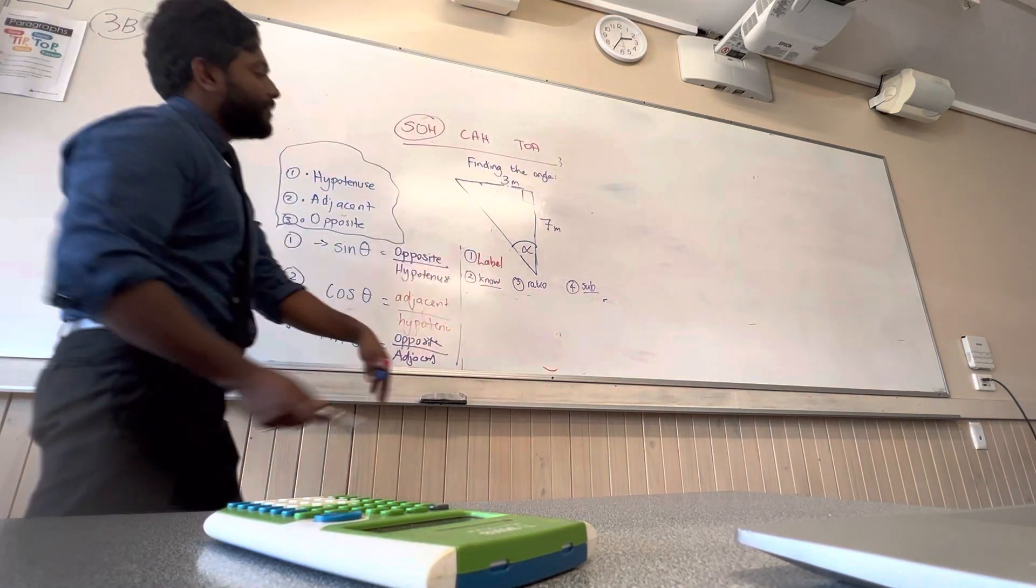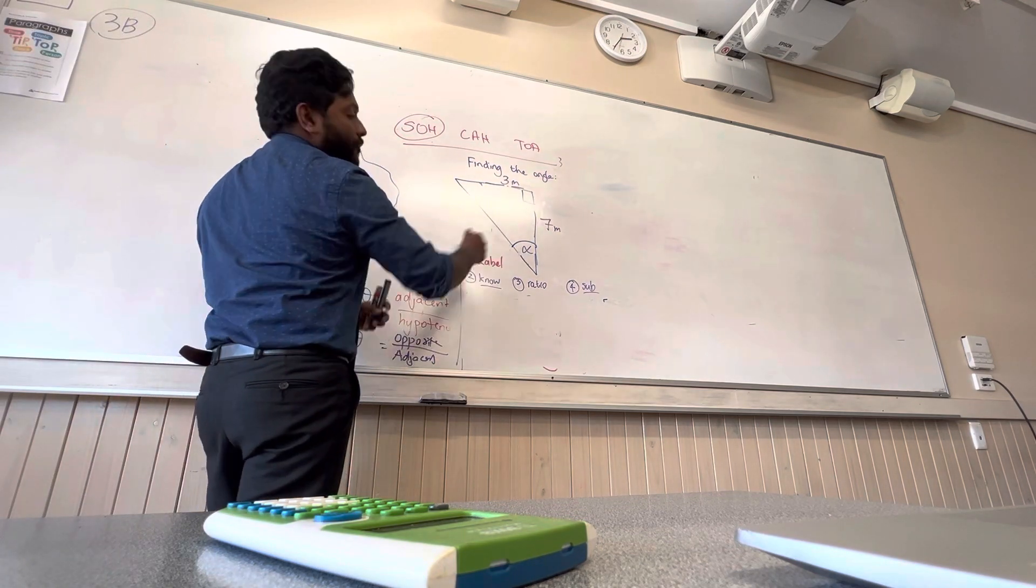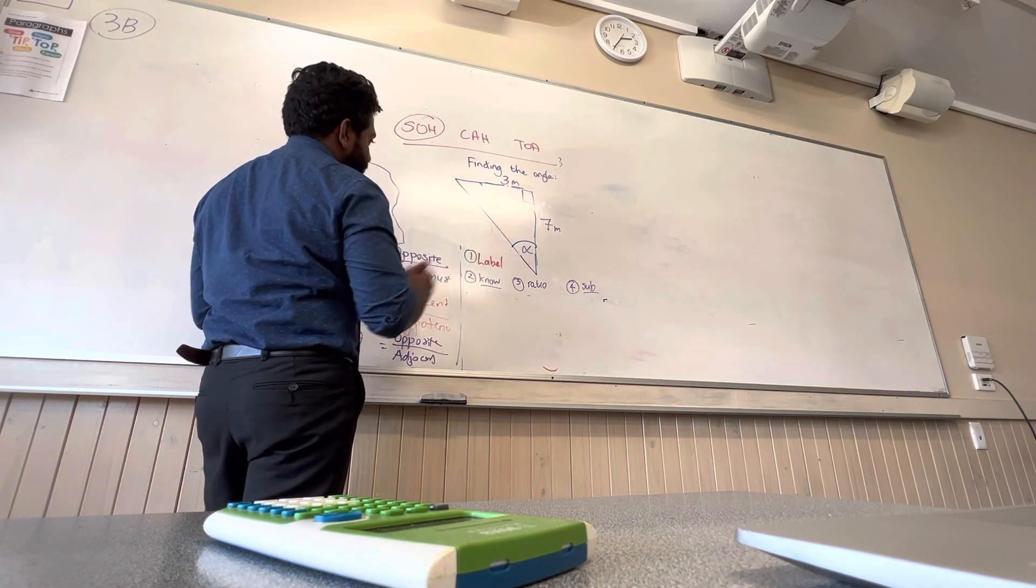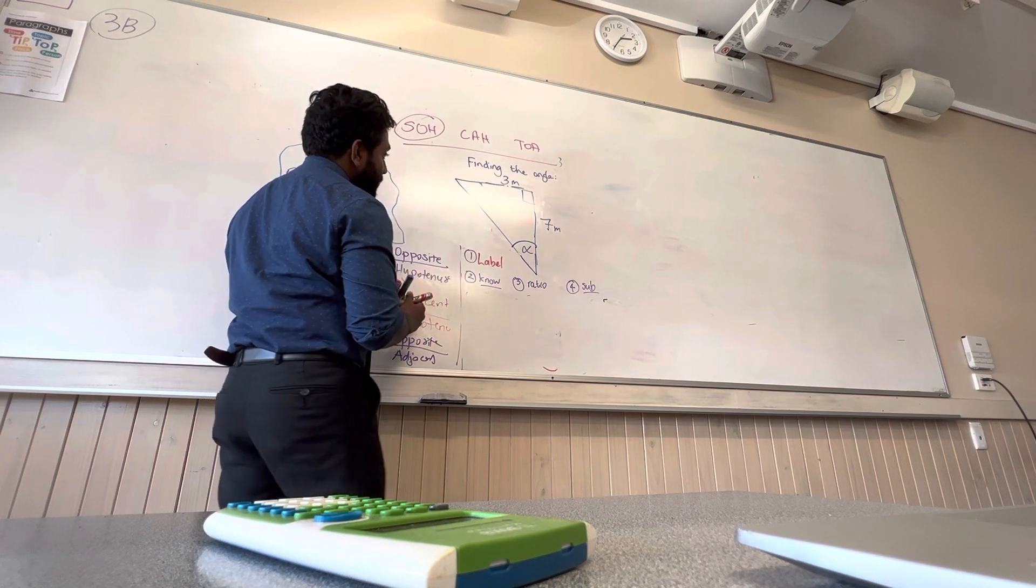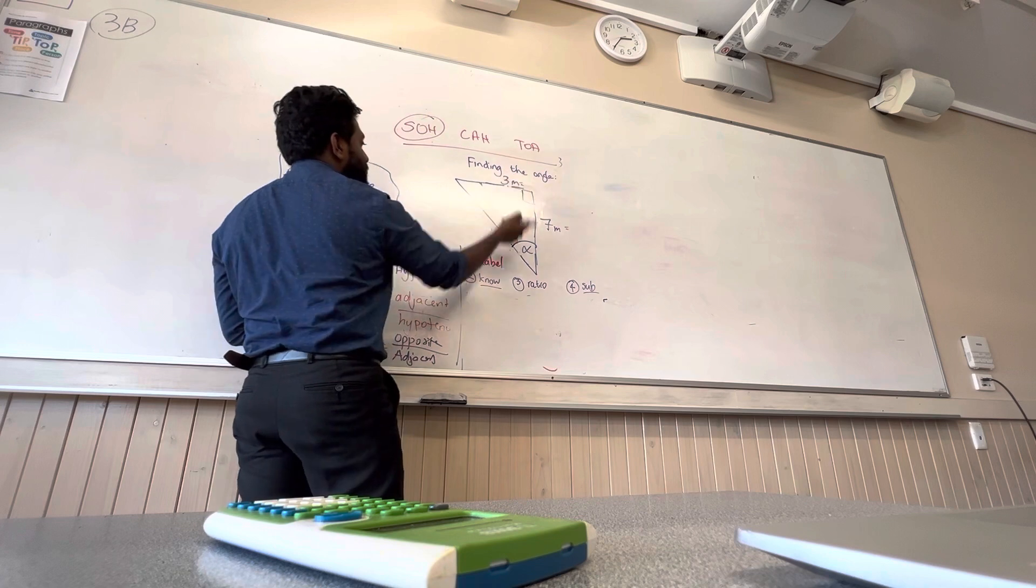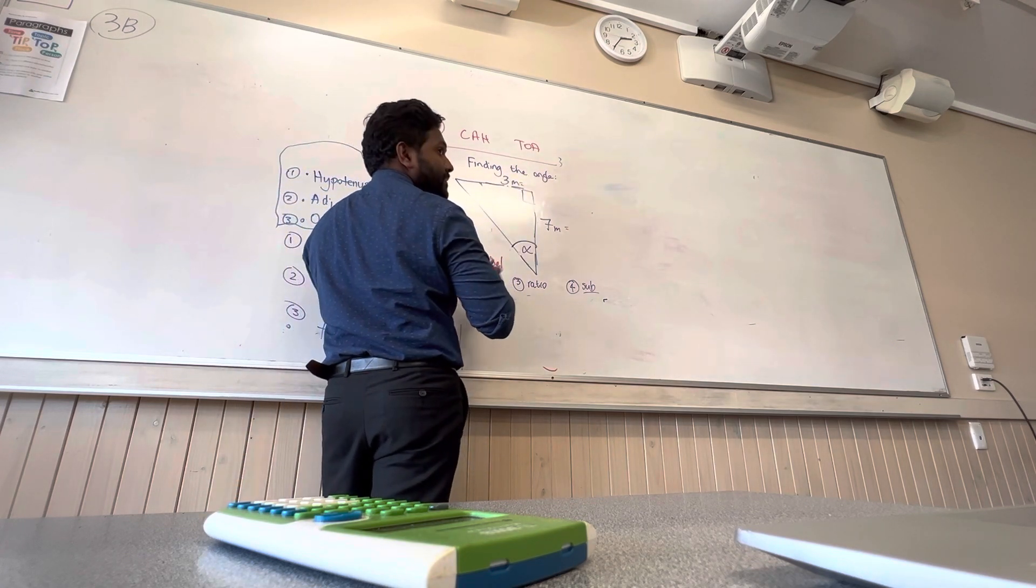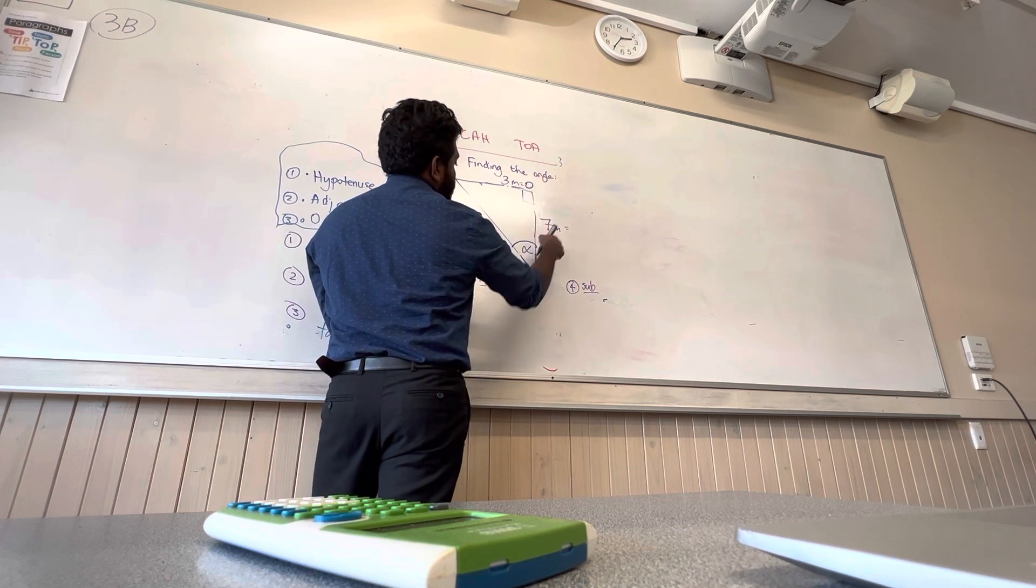With this question we need to find out the angle. You've got three meters, seven meters, and you've got alpha. So we're going to label it. This should be our alpha. That means facing opposite, you've got your three meters, so that's going to be opposite.